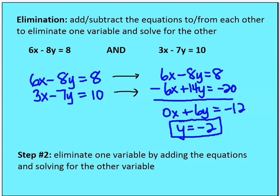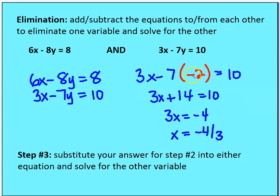Now I take the value y equals negative 2 and substitute it back into either equation — no need for another elimination step. I substitute it into the second equation, solve for x, and end up with x equals negative 4 thirds. So the process is: multiply to get equal and opposite coefficients, add the equations, eliminate one variable, solve for the other, then substitute back to find the second variable.